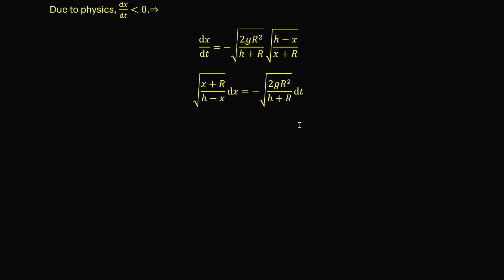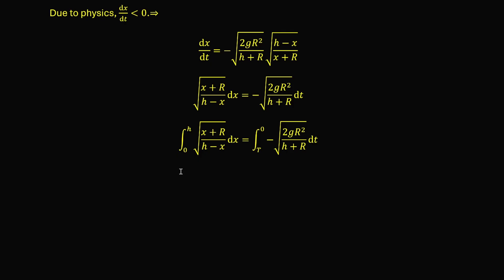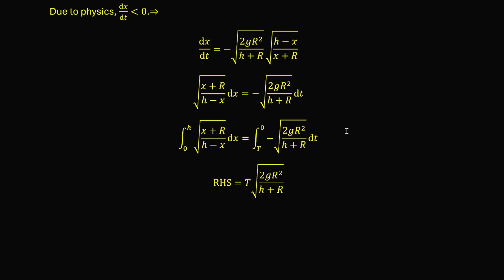We then integrate both sides using definite integrals to incorporate the initial and final conditions. The integral on the left-hand side is over x ranging from 0 to h, and the right-hand side is the integral over time from big T to 0. The lower limits correspond to the final condition: at time T, x becomes 0. The upper limits correspond to the initial condition: at time 0, the height is h. The right-hand side is integrating a constant, giving T times the square root of 2gr²/(h + r). Our focus now is integrating the left-hand side.